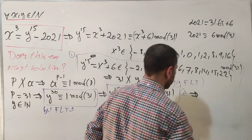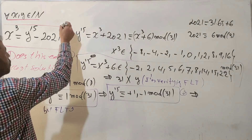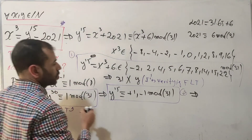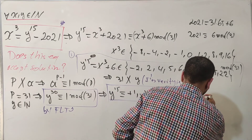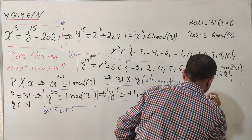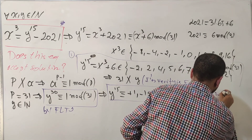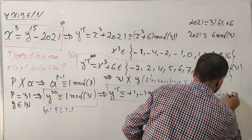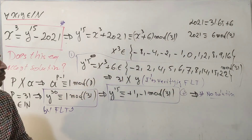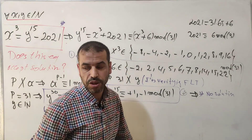But from our set, the possible values of y¹⁵ ≡ x³ + 6 mod 31 are {-2, 2, 4, 5, 6, 7, 8, 14, 15, 22} — neither +1 nor -1 appears in this set. This contradiction immediately tells us the equation has no solution.